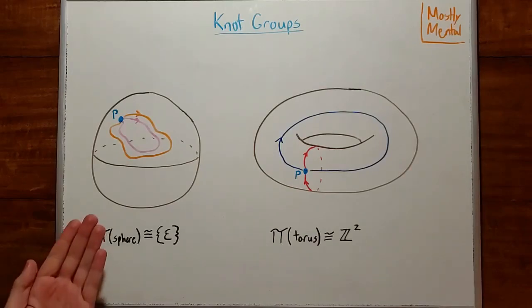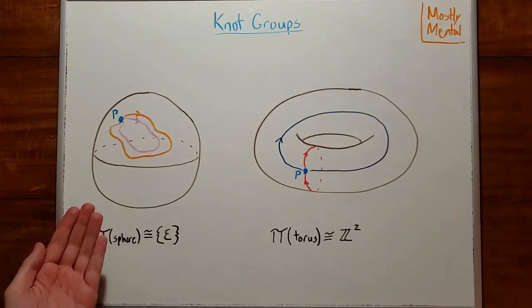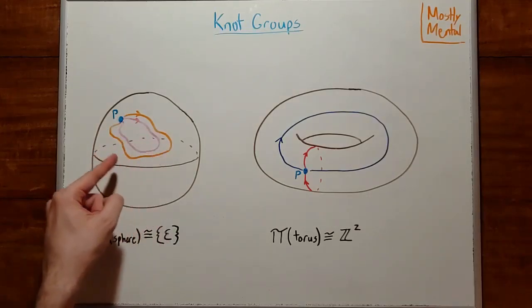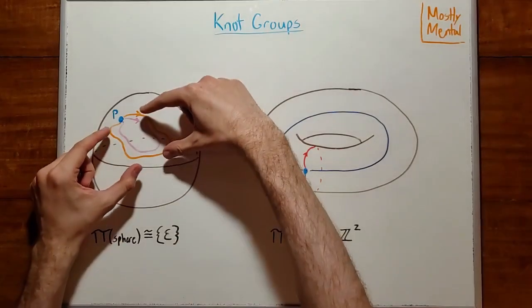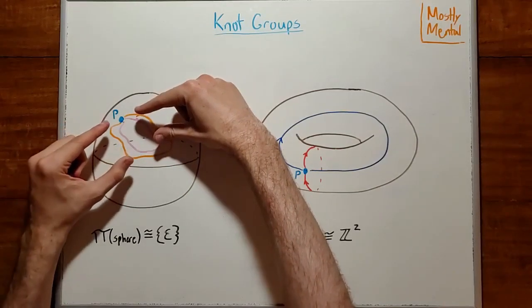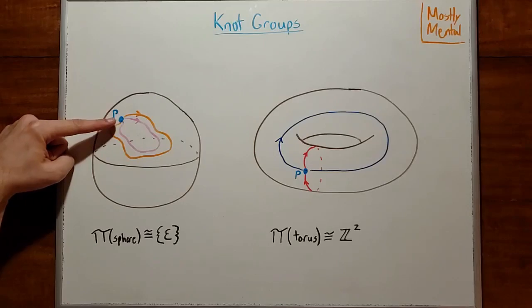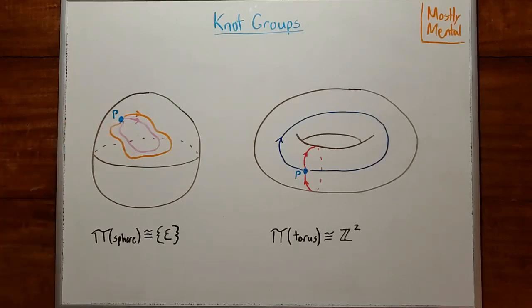But the sphere and the torus are different. How do we know? Well, let's look at their fundamental groups. Say we have a sphere like so. Consider a loop on its surface. Notice that we can take that loop and shrink it a little, bringing each of its points closer to the base point. And if we keep shrinking and shrinking and shrinking, eventually the loop will collapse down to just a single point. So this loop, and in fact every loop on a sphere, is equivalent to just sitting at the base point. Which means the fundamental group for the sphere just has one element, the do-nothing identity loop. That is, it's the trivial group.